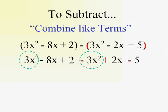3x squared, a positive 3x squared, and a negative 3x squared. That's just zero. We don't write it. Don't write zero.